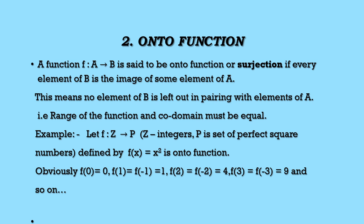Let us see another function — the onto function. A function F from A to B is said to be an onto function, or surjection. Every element of B is the image of some element of A, meaning no element of B is left out in pairing with elements of A. We can say the range of the function and the co-domain must be equal for an onto function.